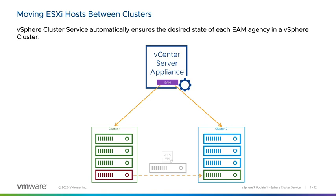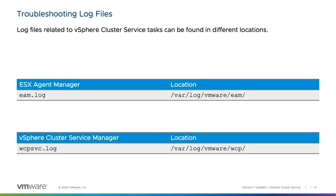Log files related to vSphere Cluster Service tasks can be found in different locations. For EAM messages, inspect the eam.log located at /var/log/vmware/eam on the vCenter Server. For the vSphere Cluster Service Manager, inspect the wcpservice.log at /var/log/vmware/wcp.